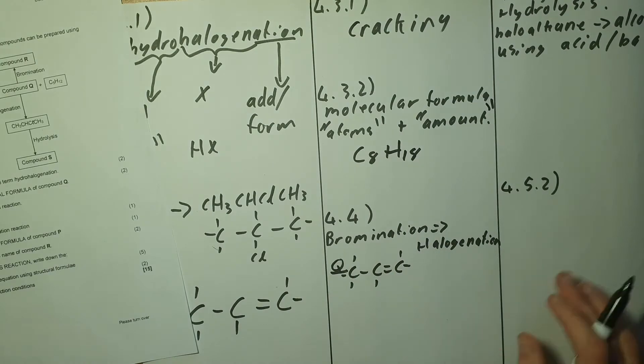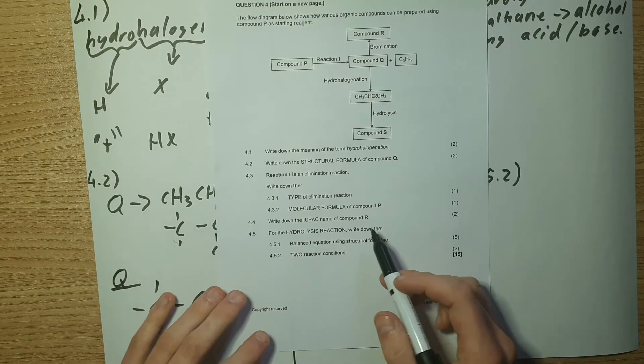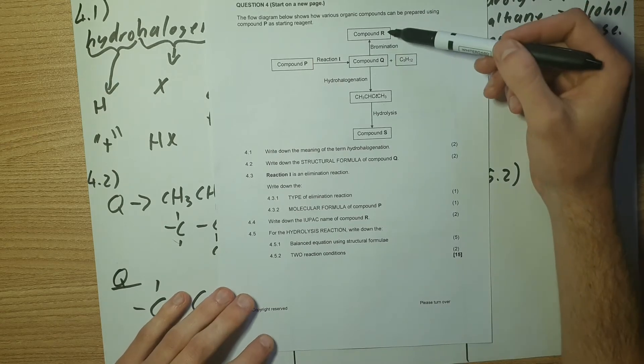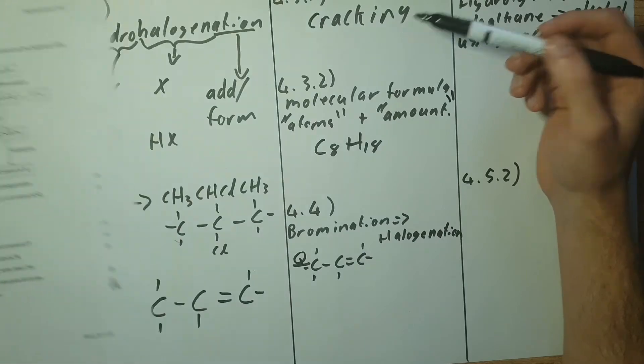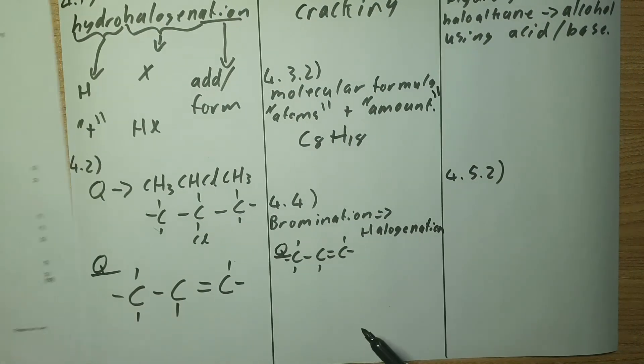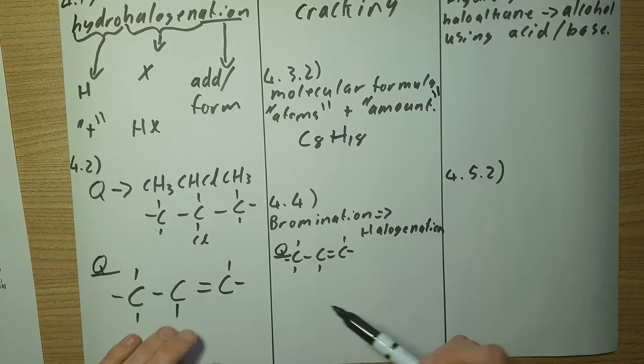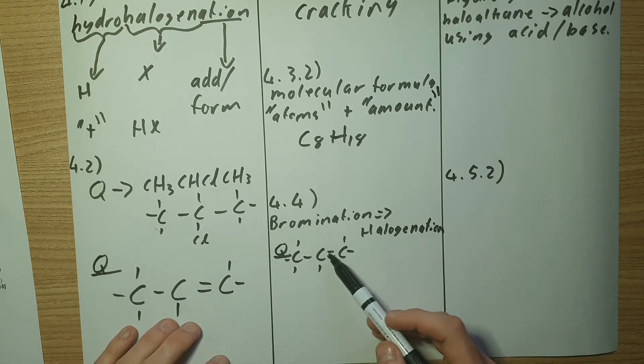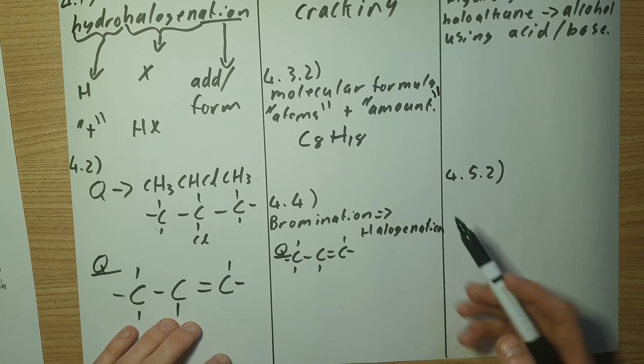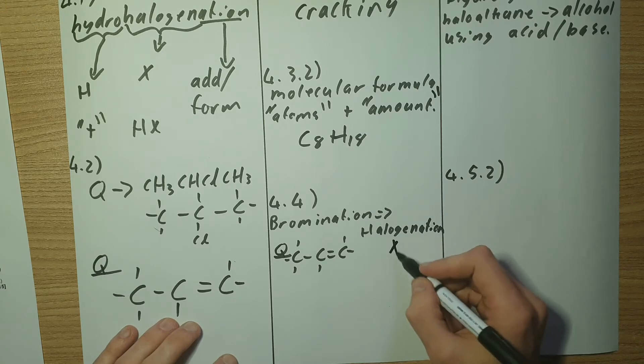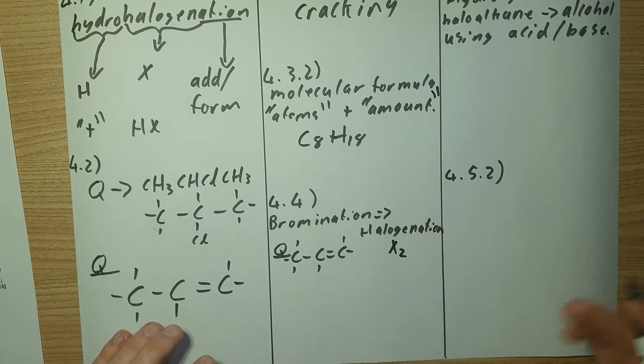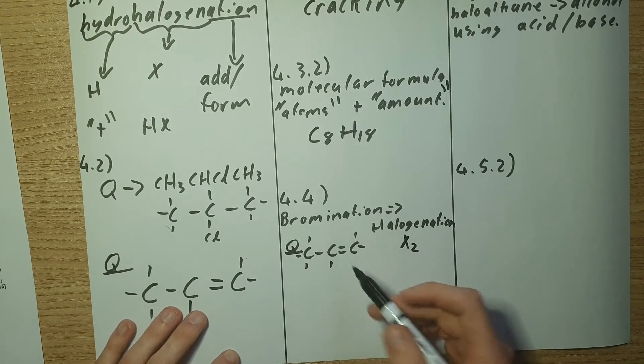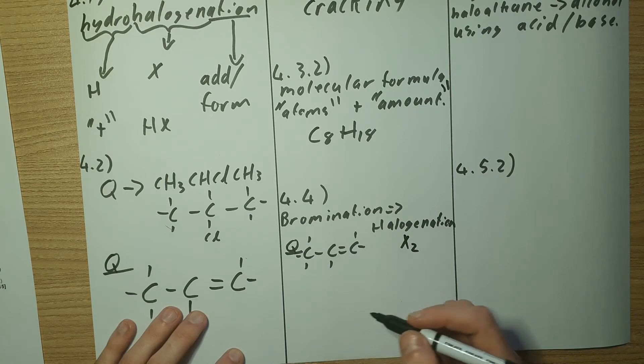4.4 says write down the IUPAC name of compound R. So compound R is formed through bromination. Bromination is just halogenation. Once again it's an addition reaction so we need to break this double bond of Q and we're adding in halogens. Now remember halogens are always added in twos. We're adding bromine which is our halogen here. So breaking this double bond I'm going to end up with the following, so three carbons still.